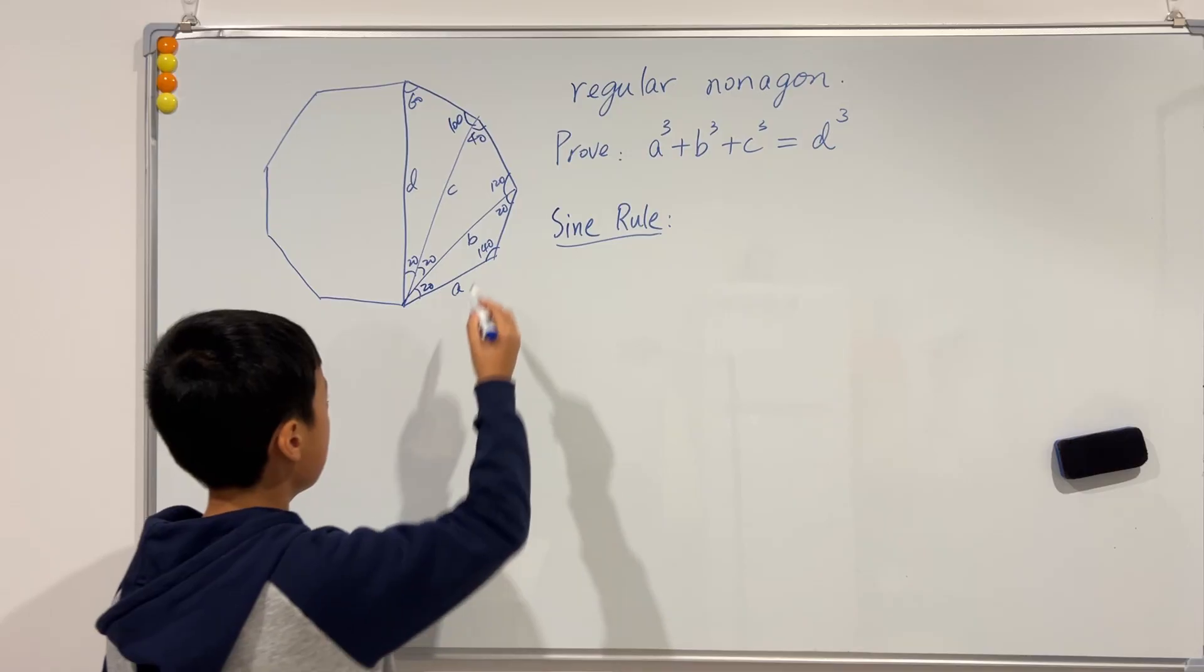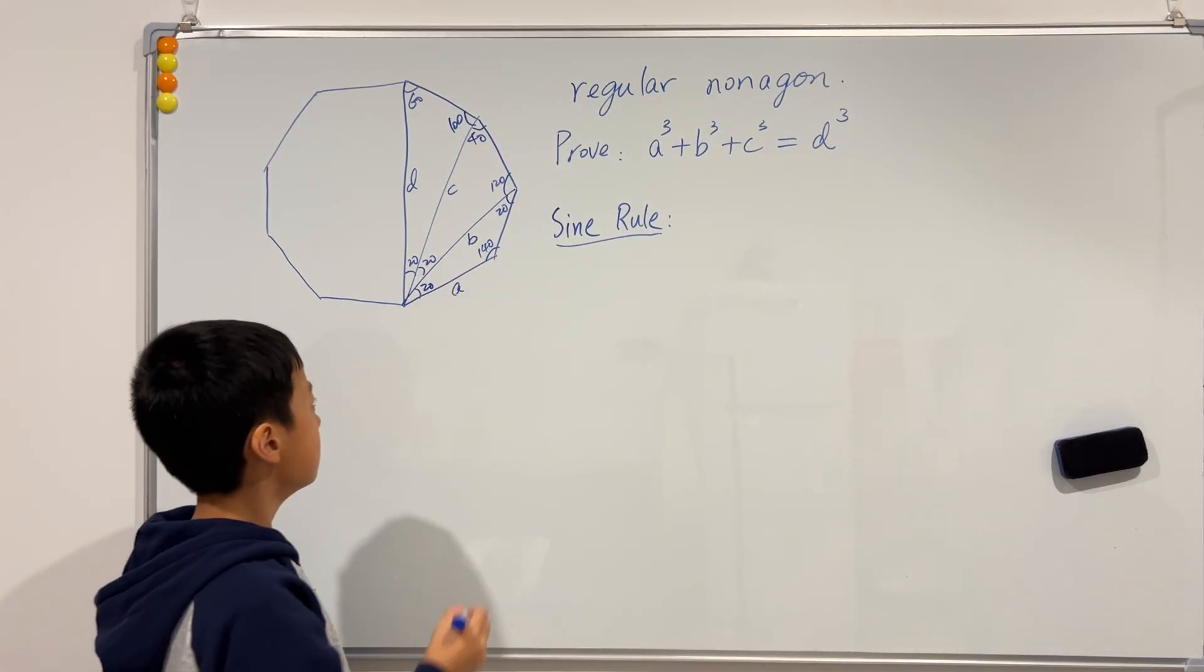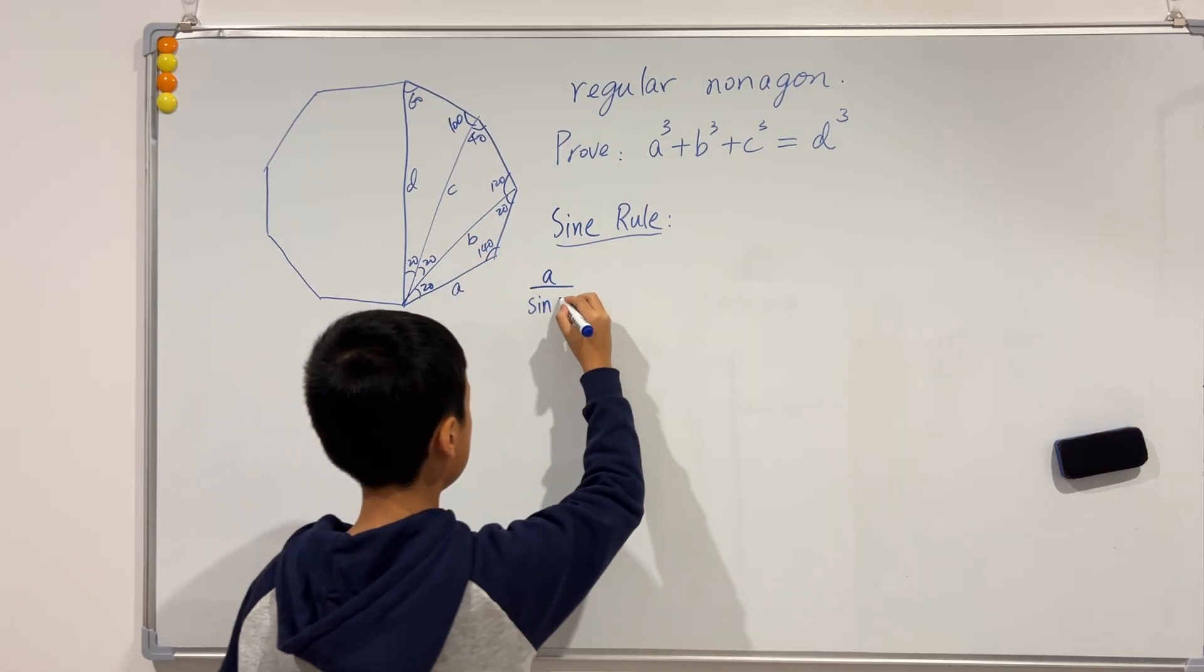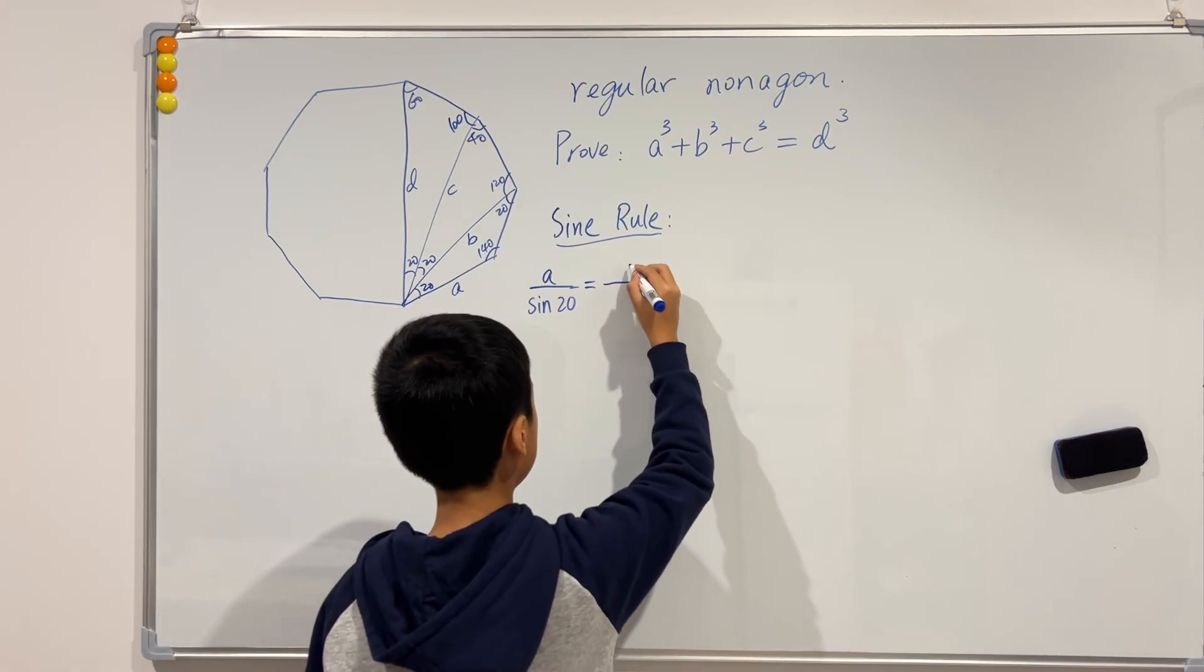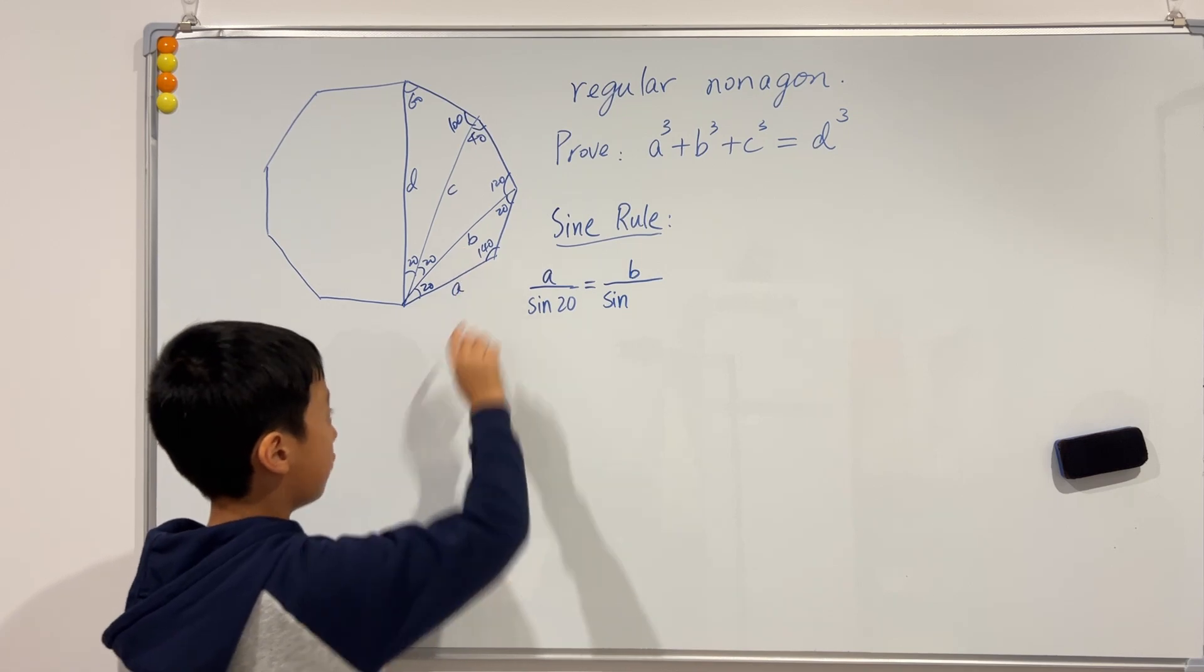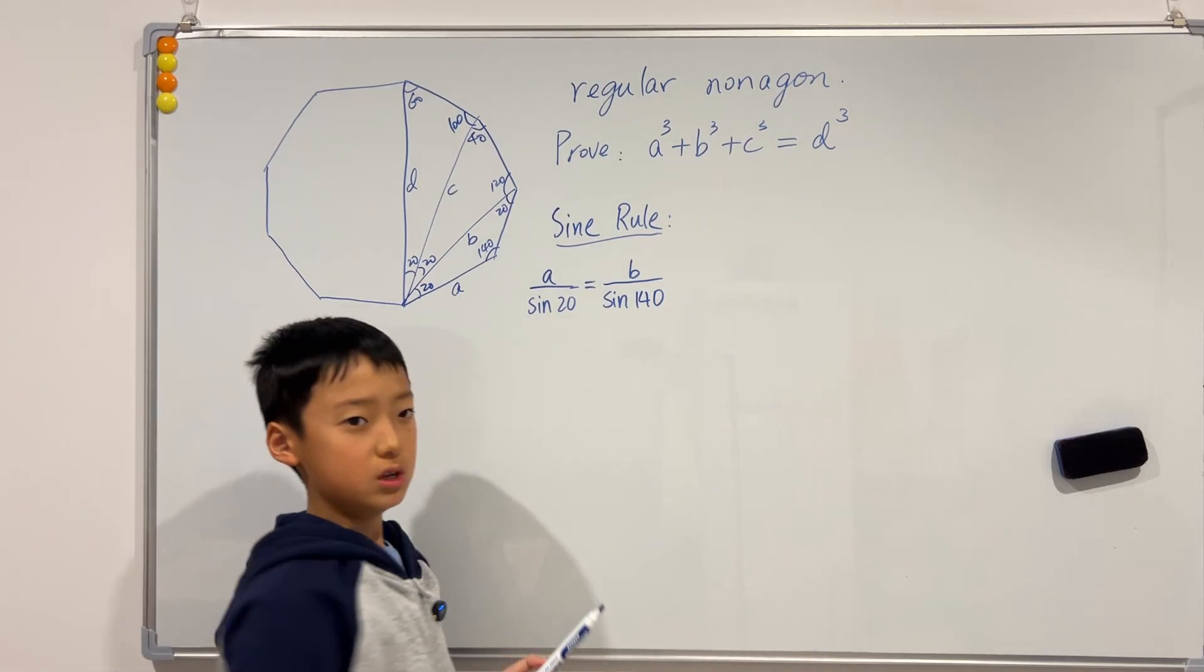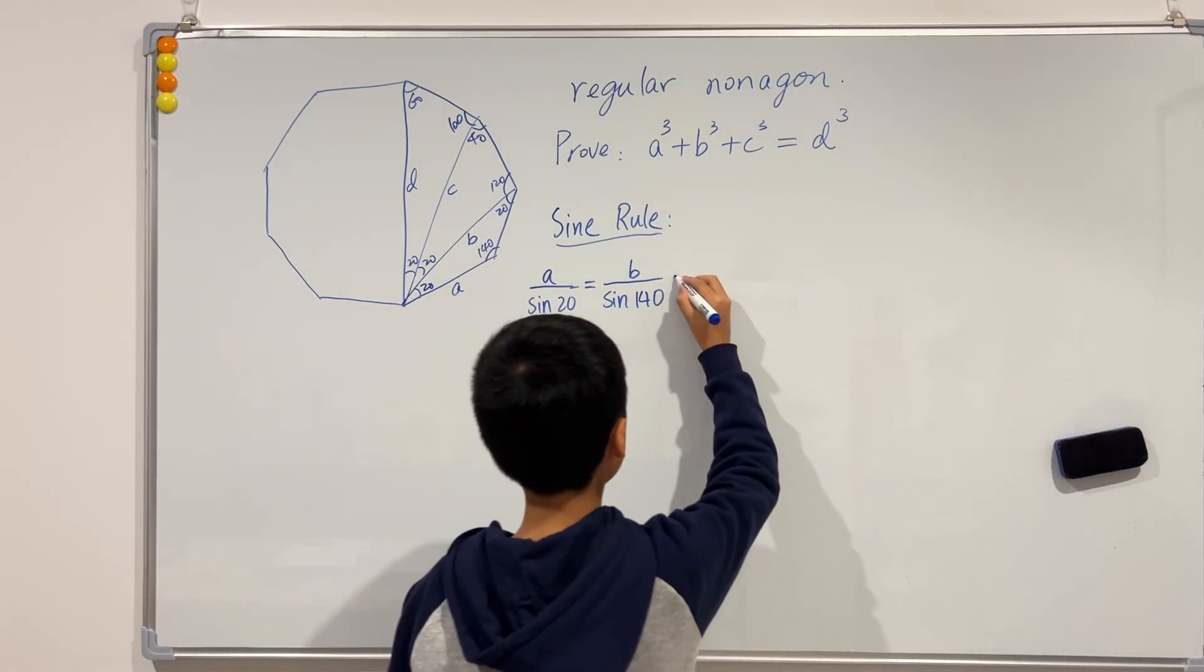So why don't we first start off sine rule in this triangle, the smallest triangle. So we know that a over sine, what is a's opposite angle? Well, it's 20. Has to be equal to b over sine, well, b's opposite angle is 140. But we think that 140 is too big. So we know that sine of 140 is equal to sine of pi minus 140, which is the same as sine of 40.